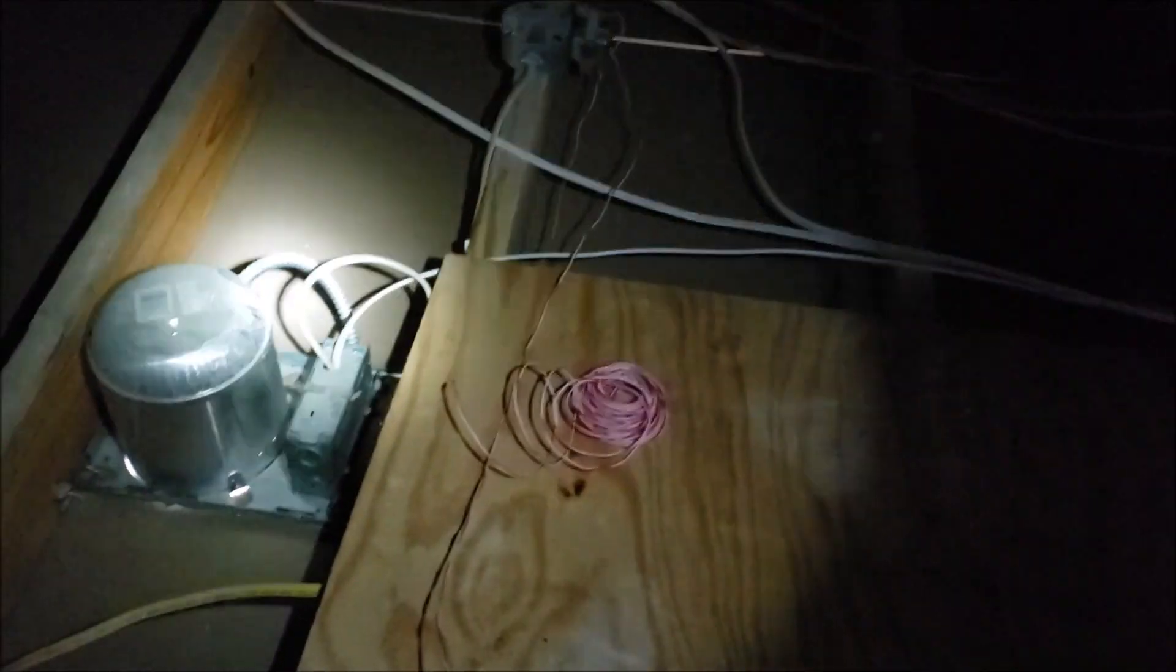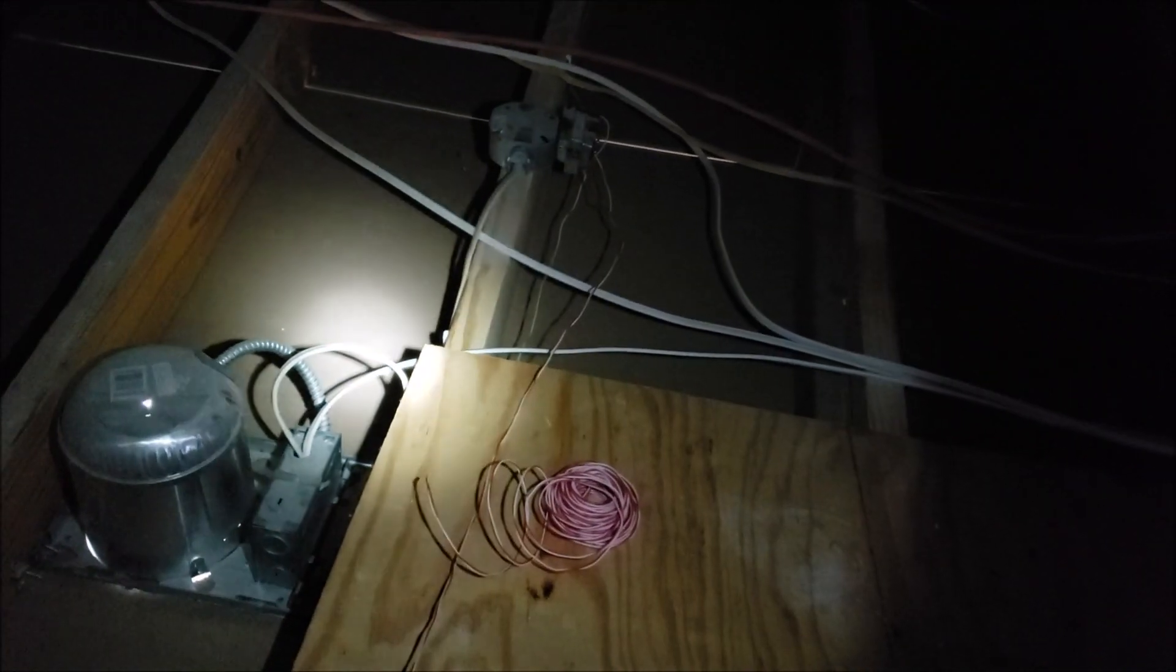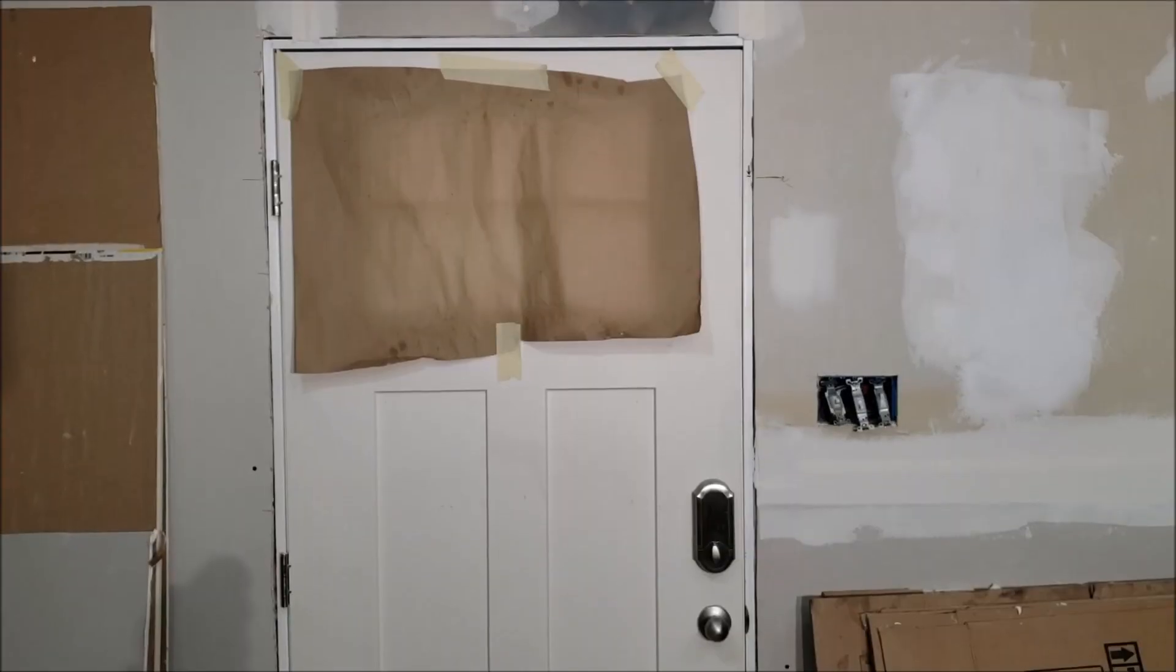We're up here in the attic. I haven't tightened anything down yet because of the insulation. You can see right here this is the living room light. There's a wire going to a box and there's the transformer right there on top of the ceiling joist.